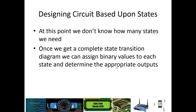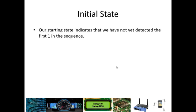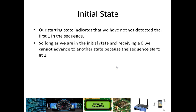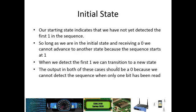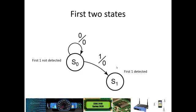We started to build a state transition diagram last time, and that's where we left off — we had completed building our state transition diagram. We started out with our initial state, which was that we hadn't yet detected that first 1 in the sequence. As long as we just kept getting 0s, we would stay there. The output would be 0 in both cases, because until we get the full 1, 0, 1 pattern, we have not yet detected the sequence.